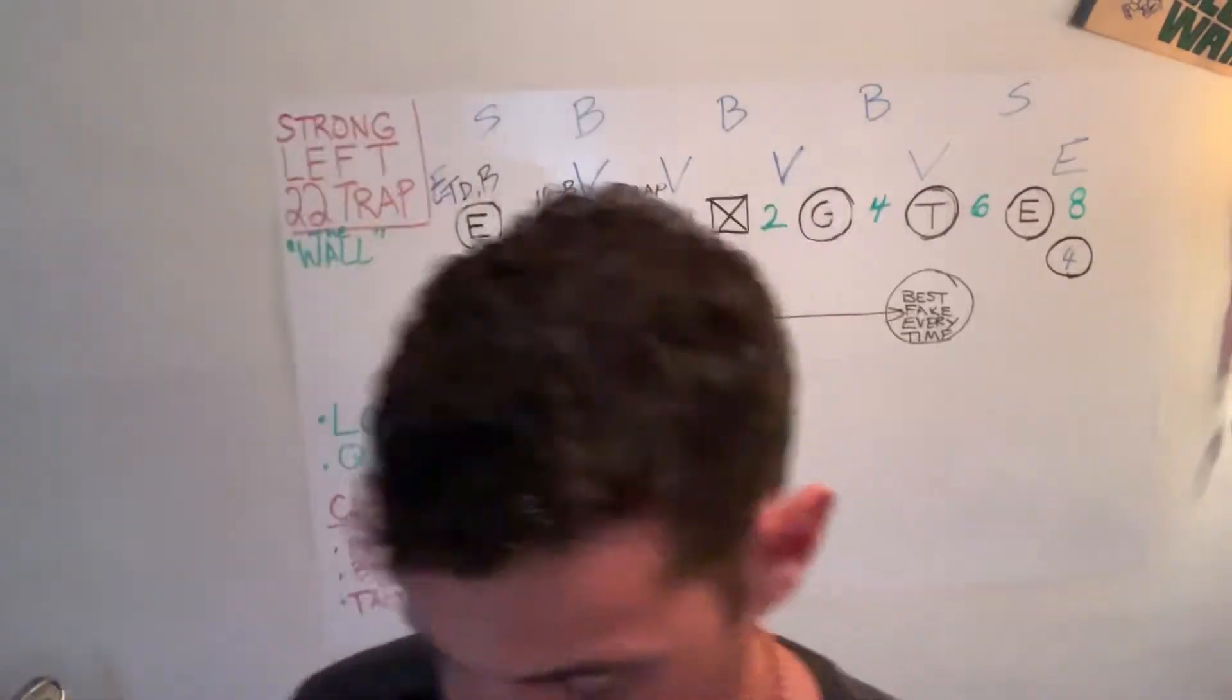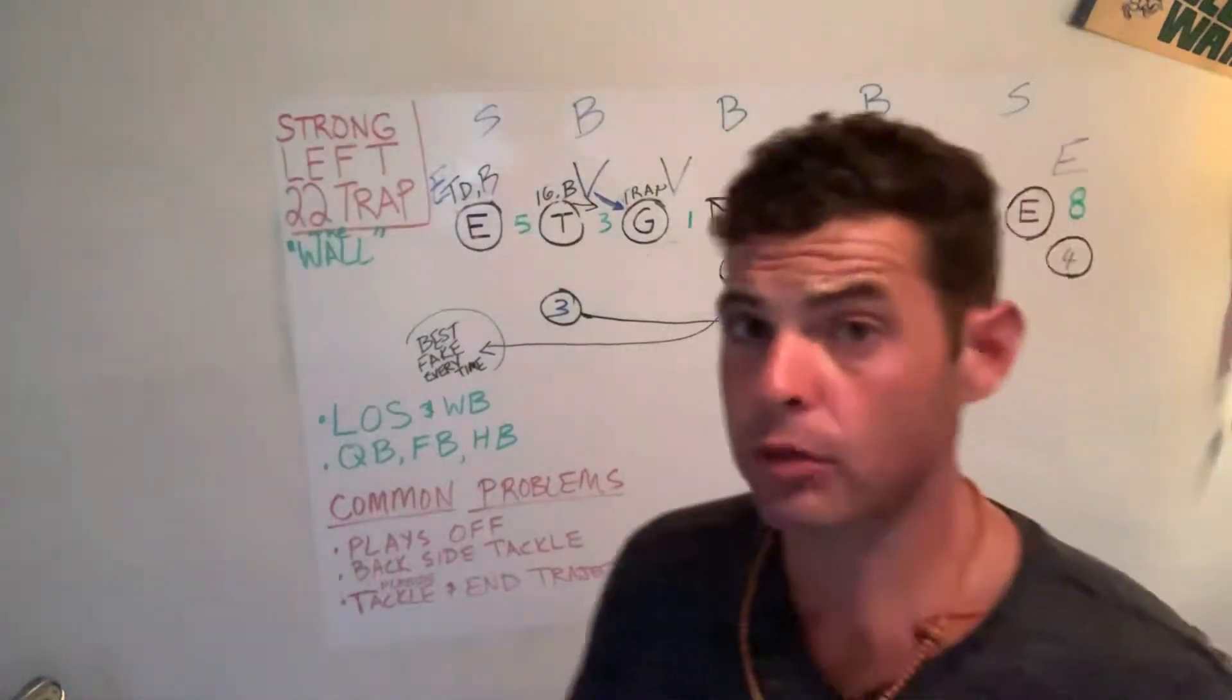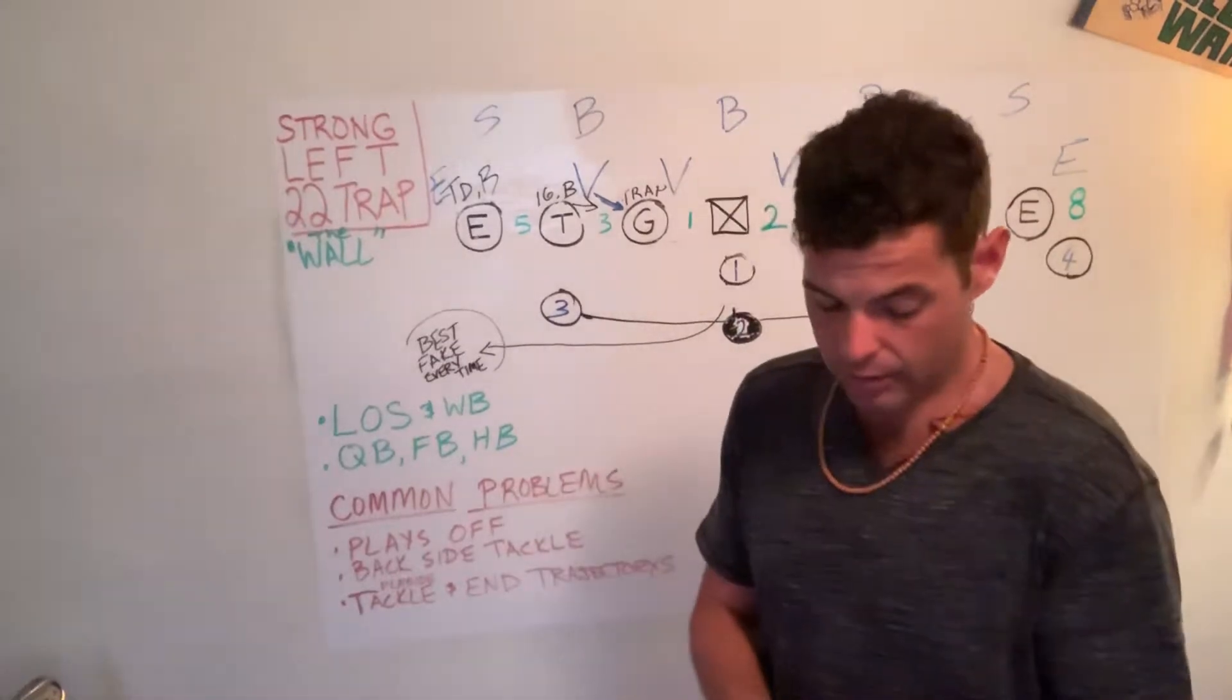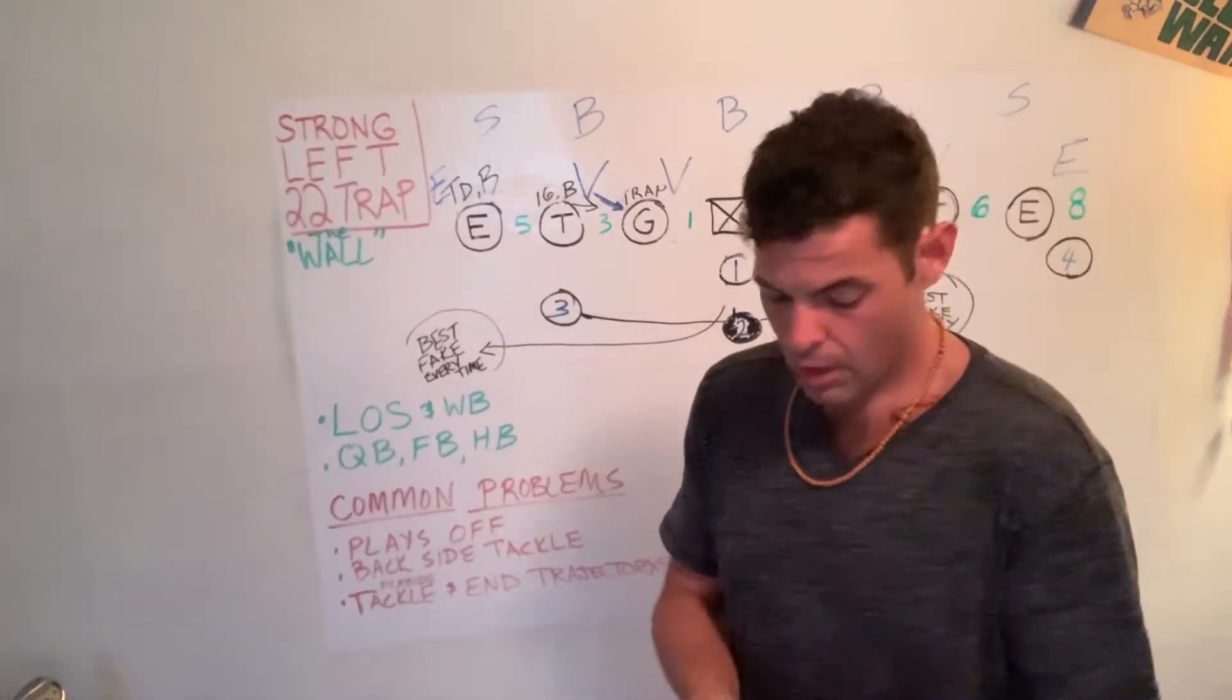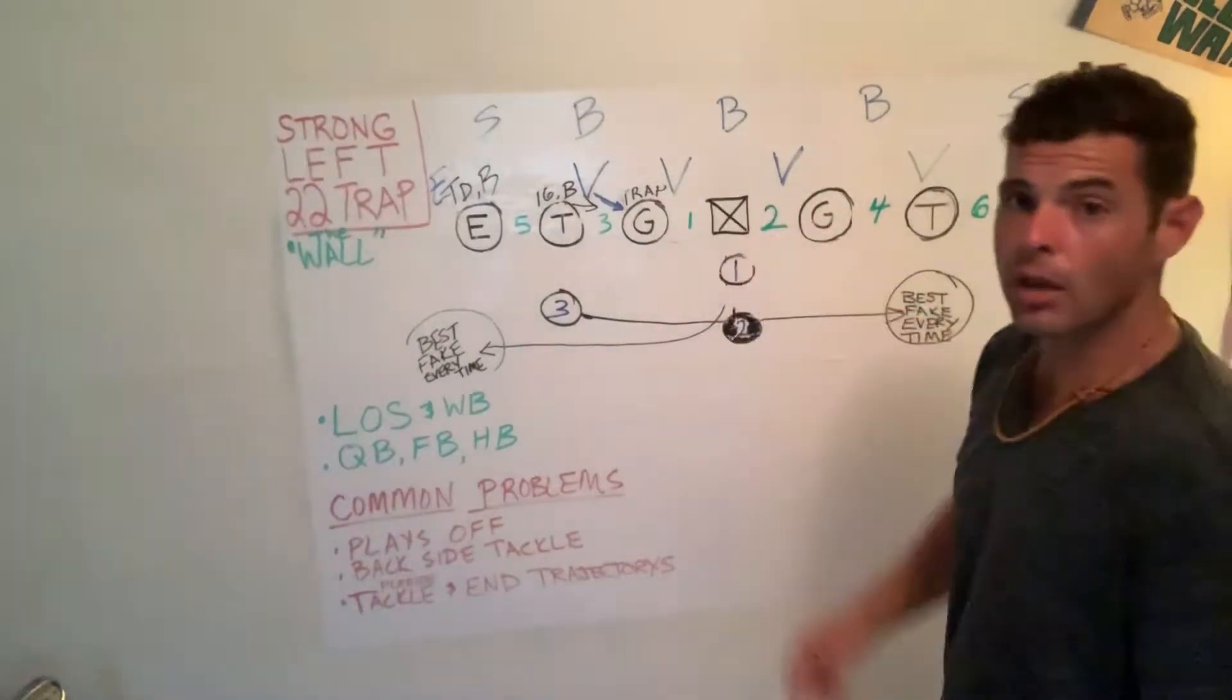Trap part 3. So, we just talked about trajectories, right? If your assignment is block the backer, right? Trajectories. So, real quick, who's the trap man on this play?